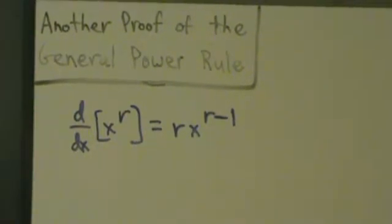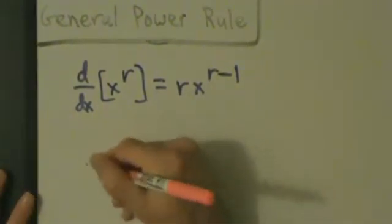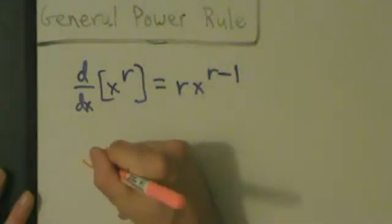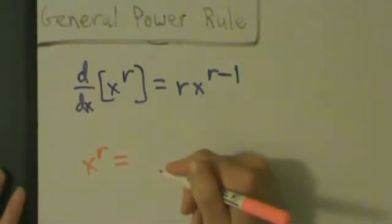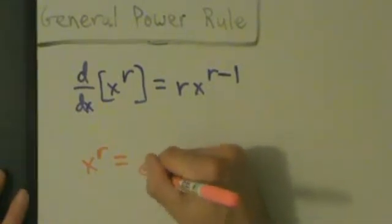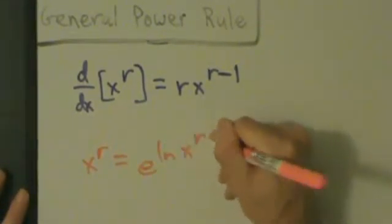Anyway, let's go ahead and see how to prove that using the chain rule. Before we do that, we want to remember something from pre-calculus. Remember, x^r equals e^(ln(x^r)).